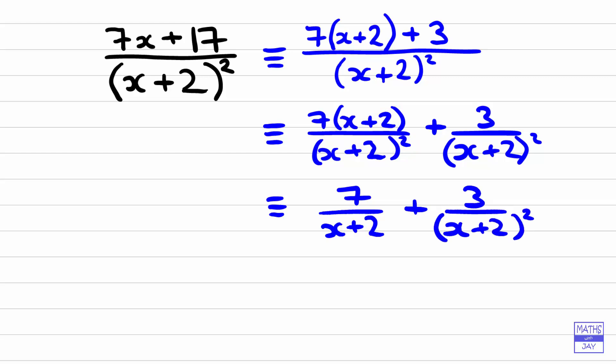So you always find when you've got a fraction like this that you end up with something over the linear factor on its own and then something over the linear factor squared.